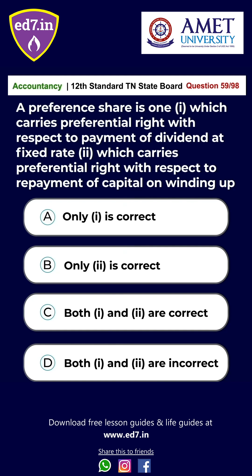Question No. 59: A preference share is one which carries preferential right with respect to (1) payment of dividend at a fixed rate, and (2) repayment of capital on winding up. The options are: A. Only 1 is correct, B. Only 2 is correct, C. Both 1 and 2 are correct, D. Both 1 and 2 are incorrect. The right answer is Option C: Both 1 and 2 are correct.